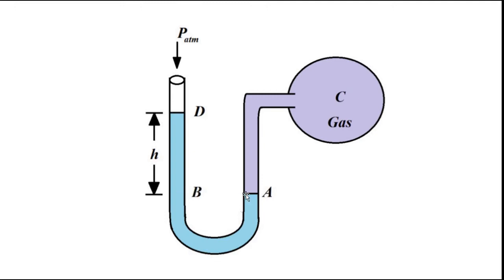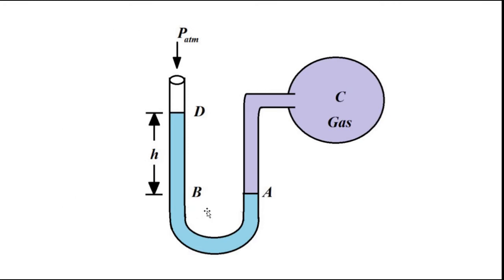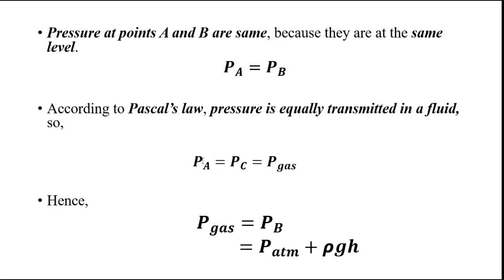Points A and B are at the same level, which means pressure at point B equals pressure at point A: P_B = P_A. We have already discussed Pascal's law in basic concepts related to fluid pressure. It states that in a closed vessel, pressure exerted by a fluid is transmitted equally to all points. So pressure at point A is transmitted equally, meaning pressure at point A equals pressure at point C: P_A = P_C, which is the gas pressure.